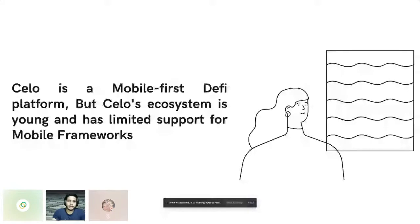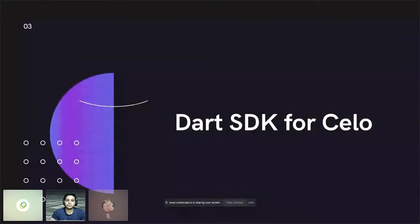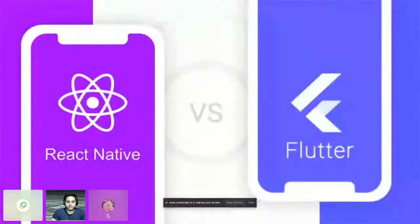So the idea was to build a Dart SDK for Celo. Flutter uses a language called Dart, which was initially developed by Google around 2013. It is a simple object-oriented language. If you're familiar with Java or any other object-oriented language, it should be very simple to pick up. It has no other complications.